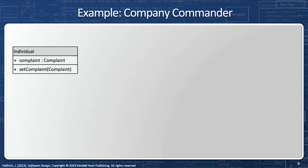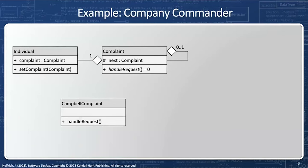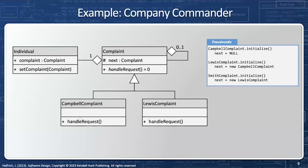Going back to our main military example: an individual may log a complaint, so I need to have a complaint type by aggregation. This has a pointer to the next complaint — zero if this is the last one in the list, or one if there are more. We then have Captain Campbell's complaint inbox, Lewis's complaint inbox, and others, all done by inheritance. In the pseudocode, Captain Campbell has no next — the buck stops with him. After Lewis comes Captain Campbell, and after Smith comes Lewis.